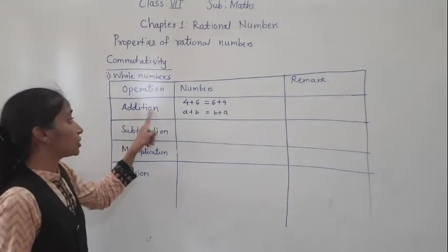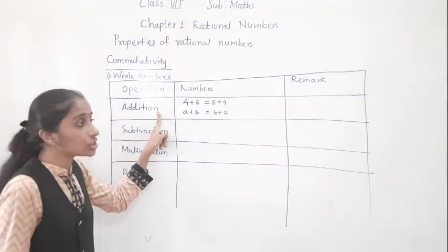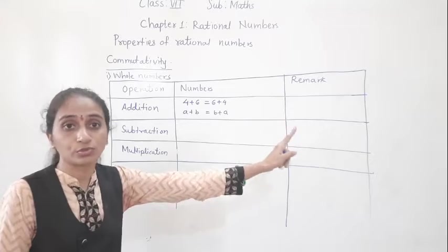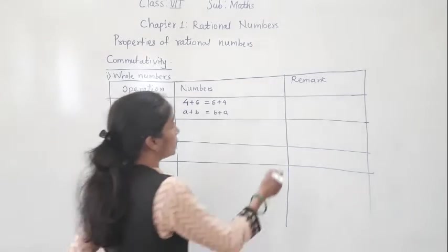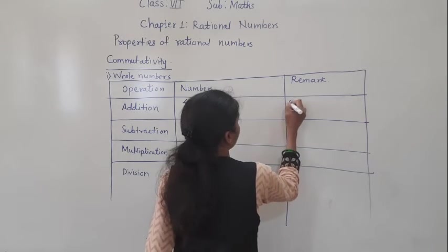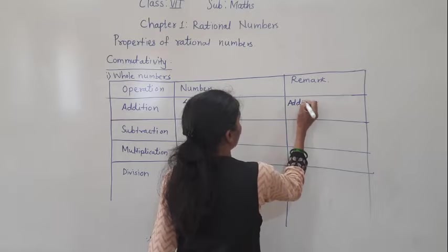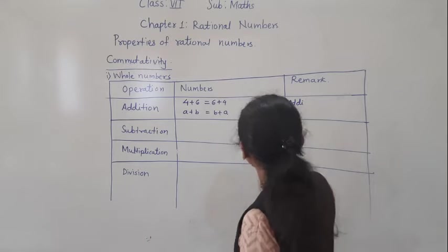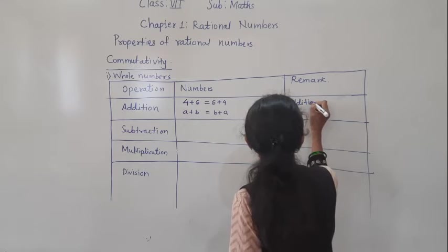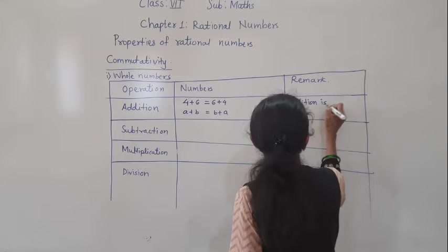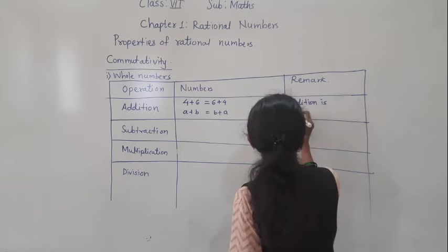So for addition, what will it become? Addition is commutative. This means the commutative property works for addition.